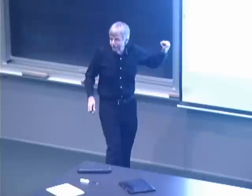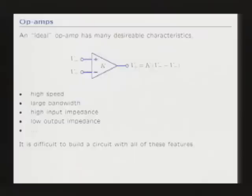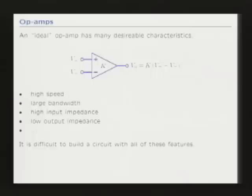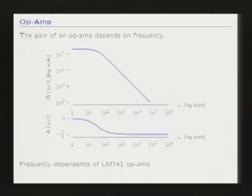Let's think about an op-amp. An ideal op-amp would have many desirable properties: very high speed, broad bandwidth, very low output impedance so it works like a perfect voltage source, and very high input impedance so it doesn't load whatever it's connected to. Unfortunately, it's difficult to build a circuit that has all of those things. Here's one of the world's most popular op-amps, the LM741, invented long ago and still used today.